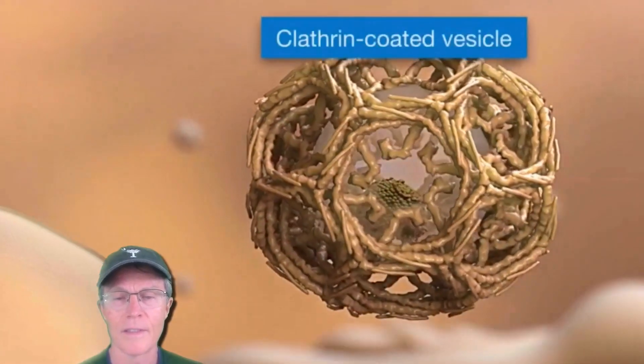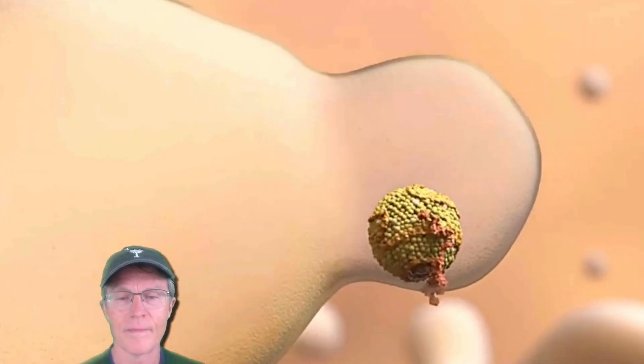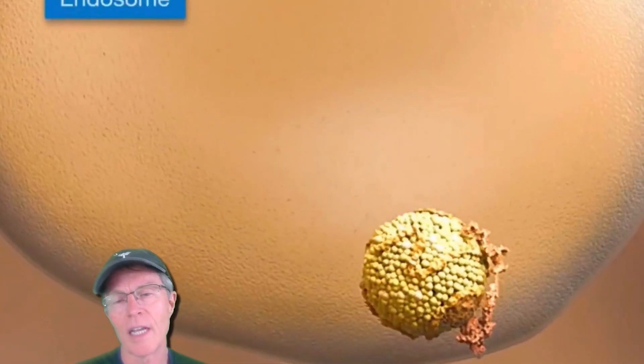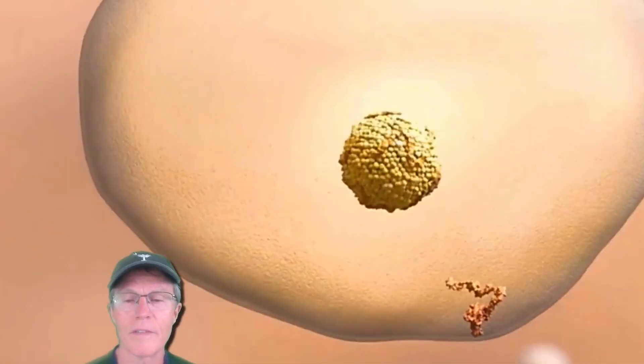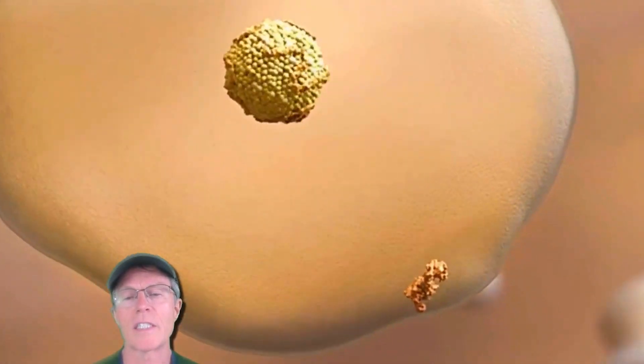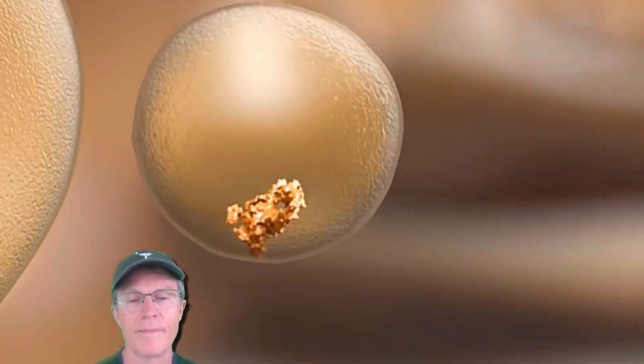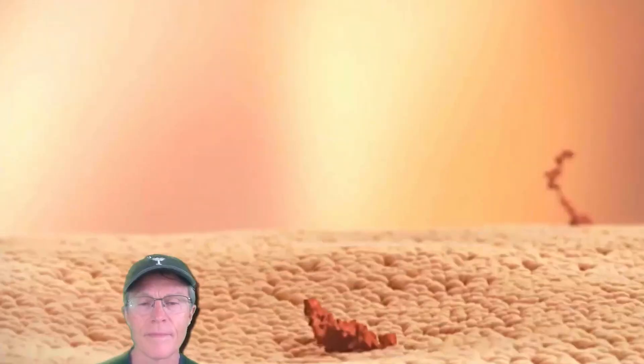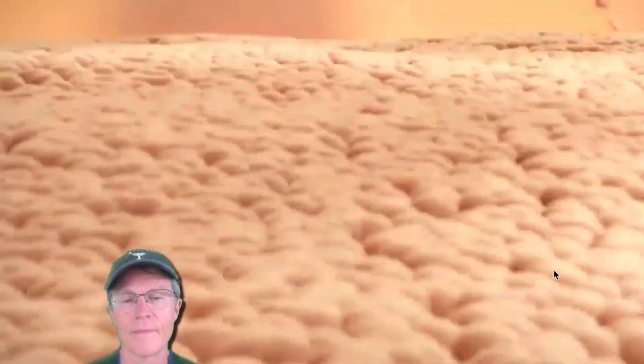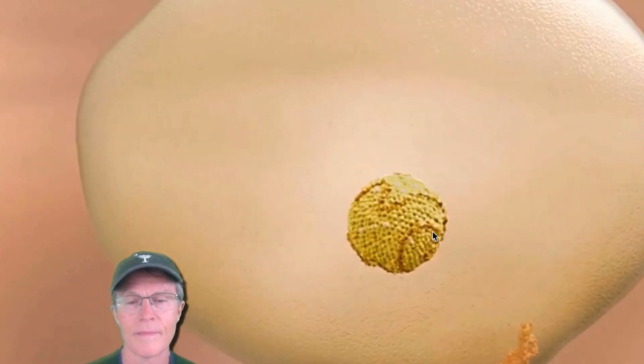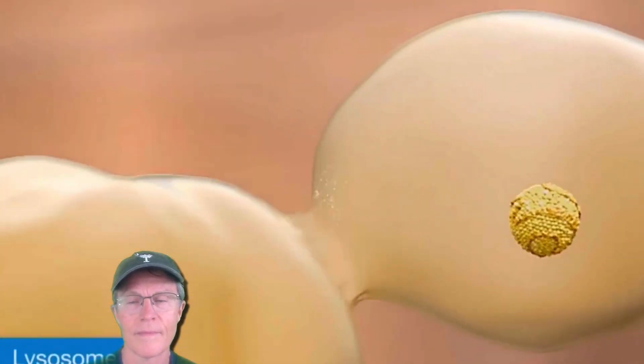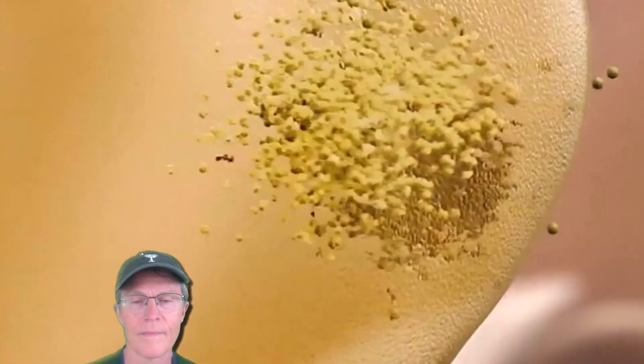The LDL-LDL receptor complex is taken up by the hepatocyte in clathrin-coated vesicles. Inside the cell, these vesicles fuse with endosomes and the acidic environment of the endosomes facilitates the dissociation of the LDL-LDL receptor complex. The LDL receptor cycles back to the cell surface where it binds to additional LDL particles, leading to a further reduction in plasma LDL cholesterol. Free LDL in endosomes are transported to lysosomes, degraded into lipids, free fatty acids, and amino acids.